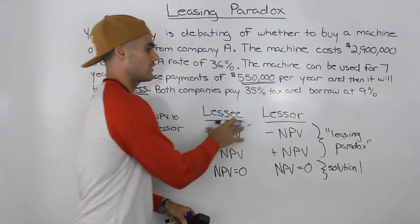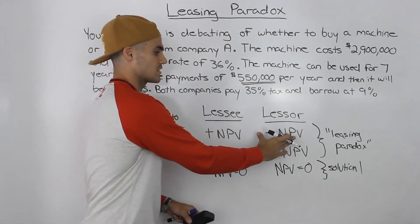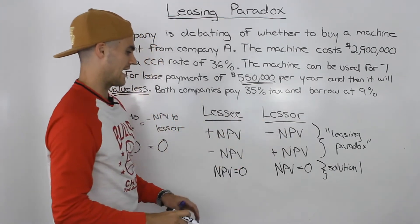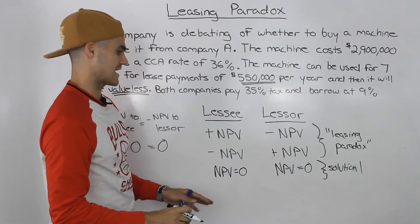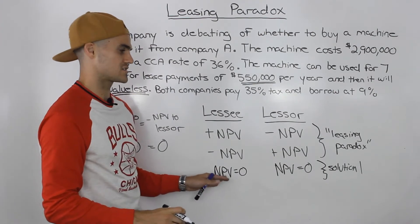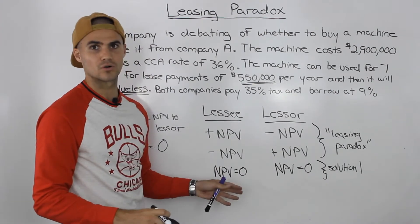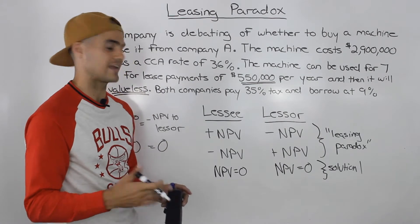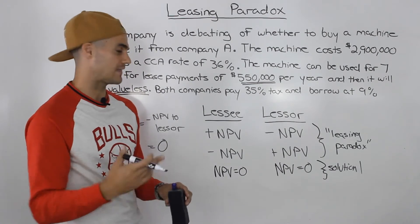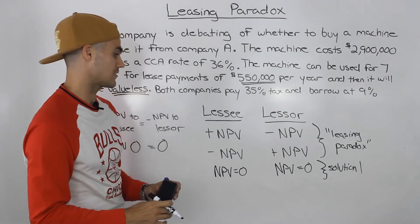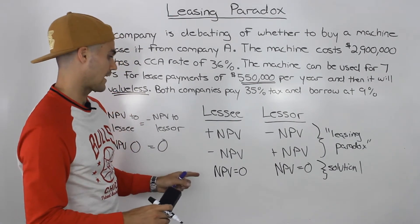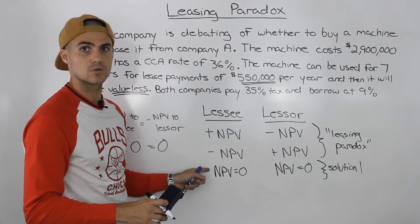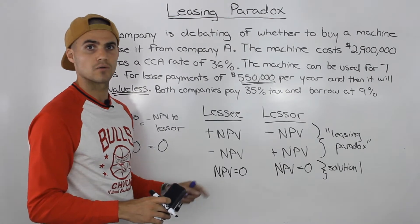So instead of having a winner and a loser, we're going to have a transaction where both parties don't win or lose — they're just sort of both indifferent. And that's going to happen when both of their NPVs are going to equal zero.